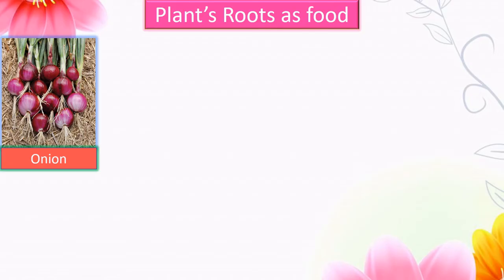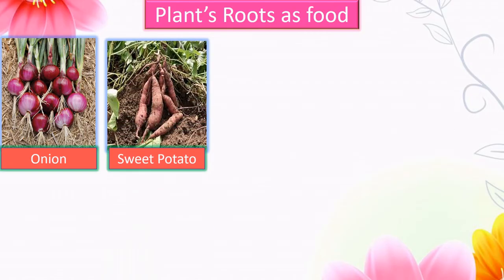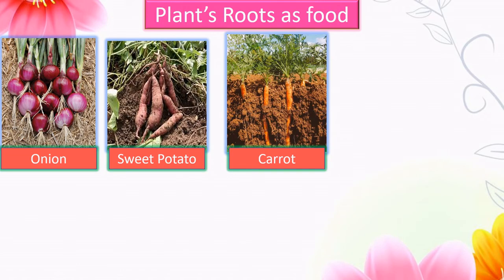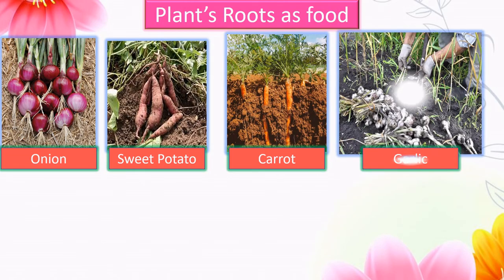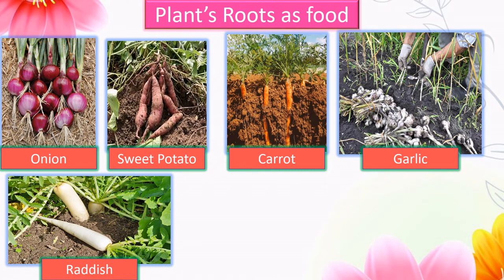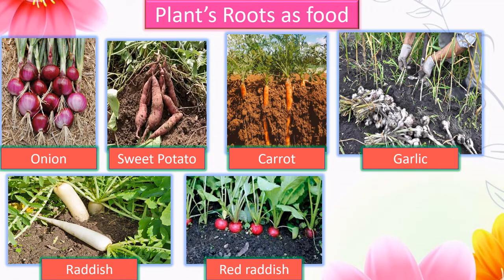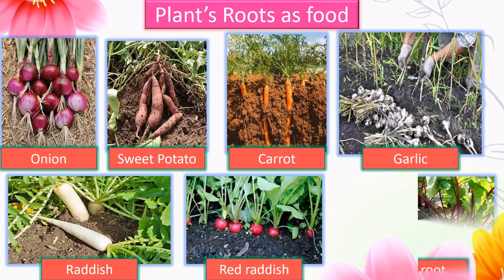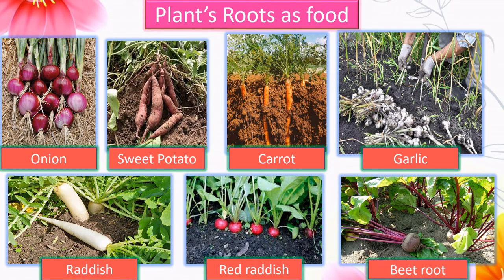Now let us see how the root parts of plants are used as food. Examples are onion, sweet potato, carrot, garlic, white radish, red radish, and beetroot.